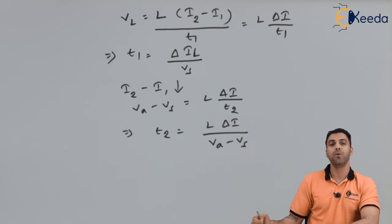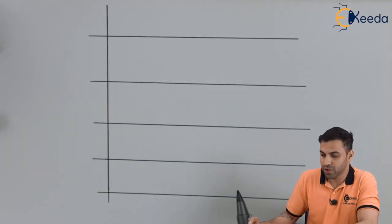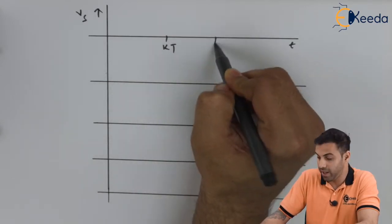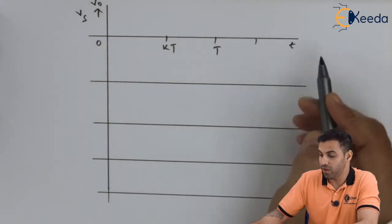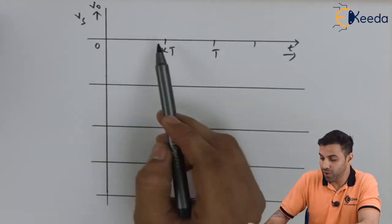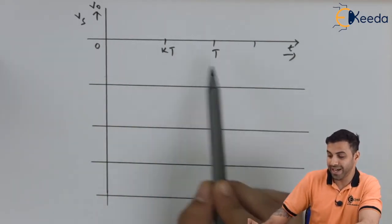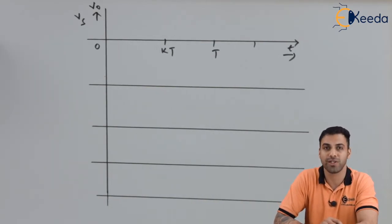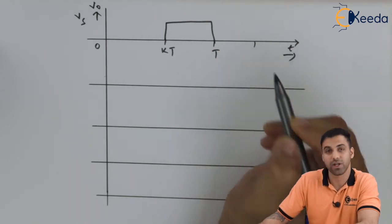Now let's see how the graphs between various factors with respect to time look like for a boost converter. If we draw the output voltage V0 versus time: from 0 to KT, there is no output voltage across the load because the inductor is charging. But from KT to T, when the inductor starts discharging and current flows through the output resistive load, we get the output voltage across the load. This waveform repeats each cycle.